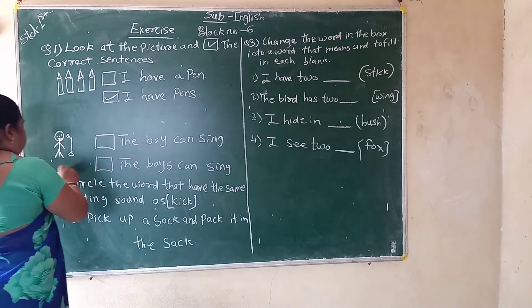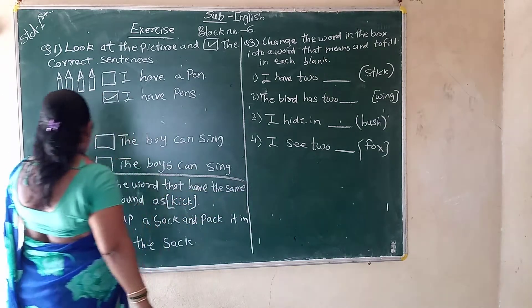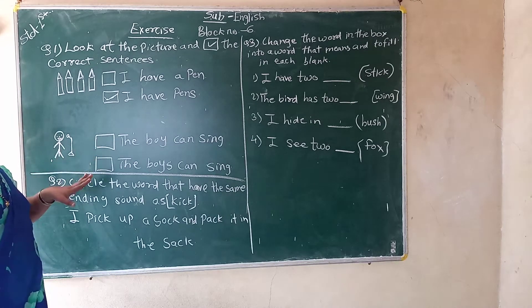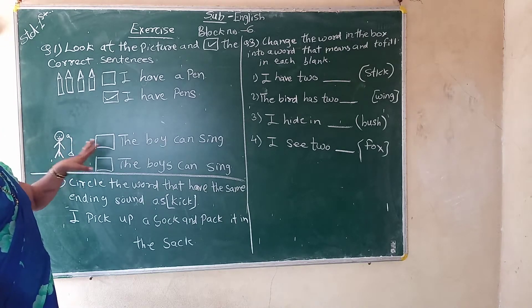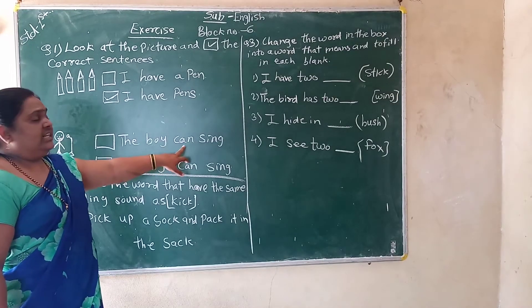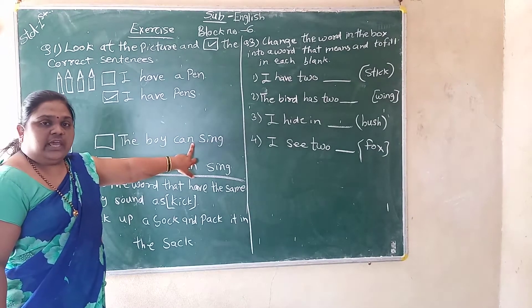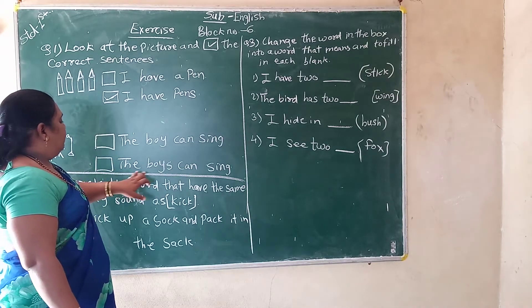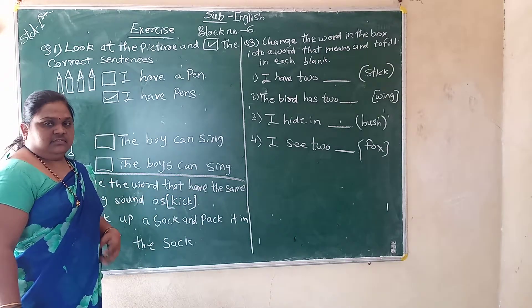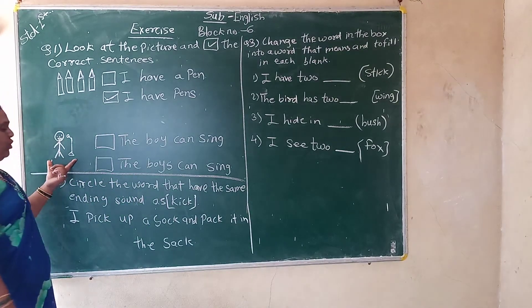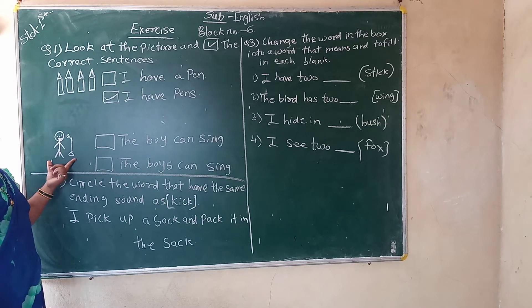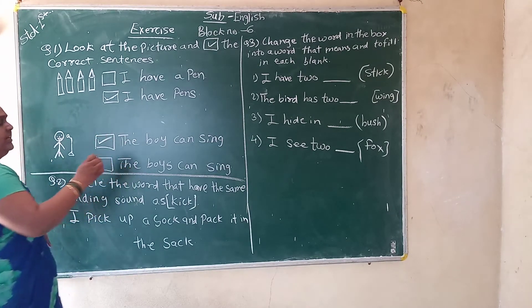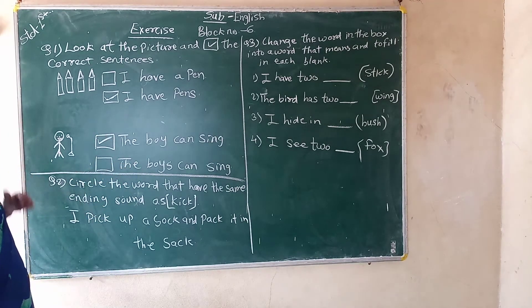Now see the second one. This is a boy and he is singing. You have to see and take the correct sentence. Is it 'The boy can sing' or 'The boys can sing'? How many boys are there? One boy. So which is the correct answer? The first one — 'The boy can sing.' This is the correct answer.